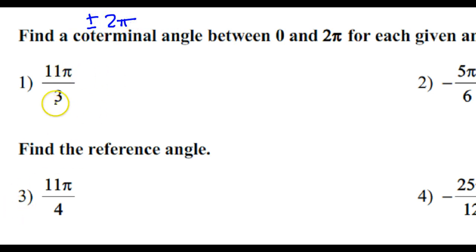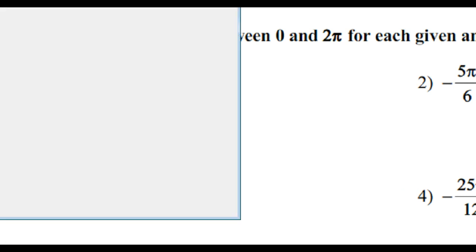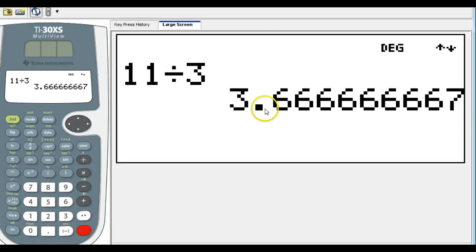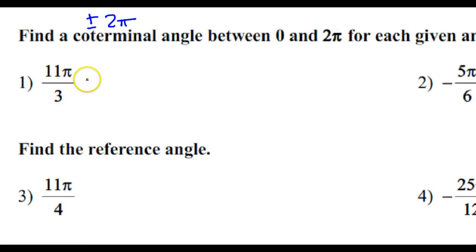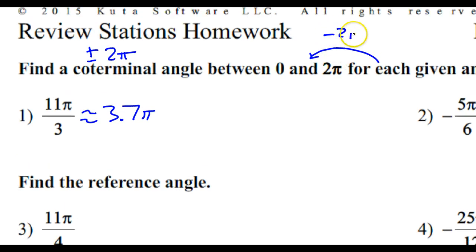So in this case, 11 over 3 as a decimal is about 3.7, and so that means that this is approximately 3.7π. So this is definitely bigger than 2π. So I need to subtract 2π to get it down into the zone between 0 and 2π.